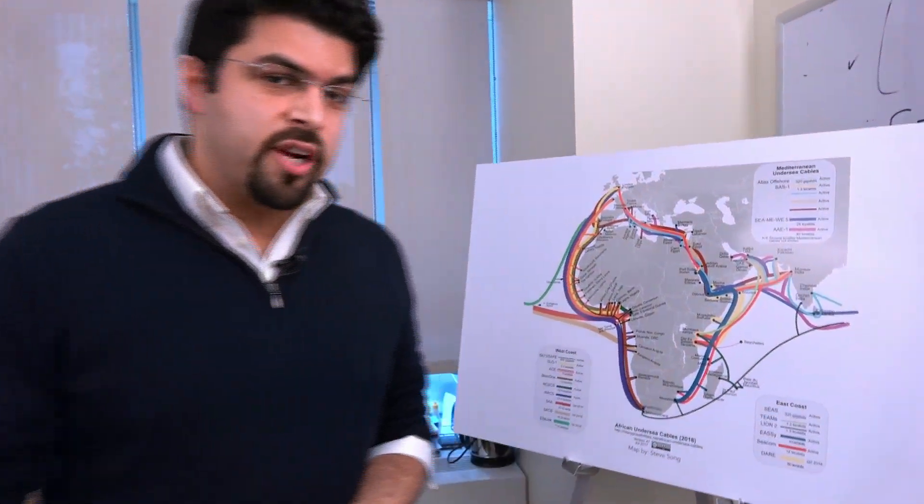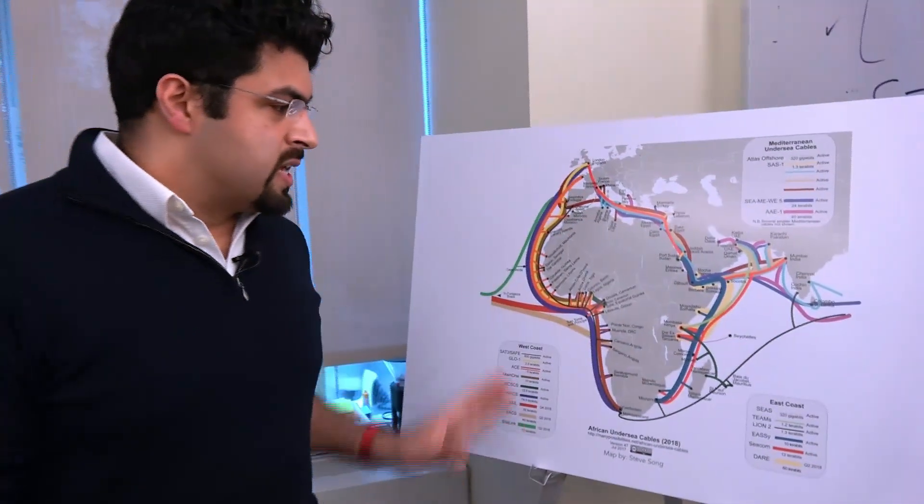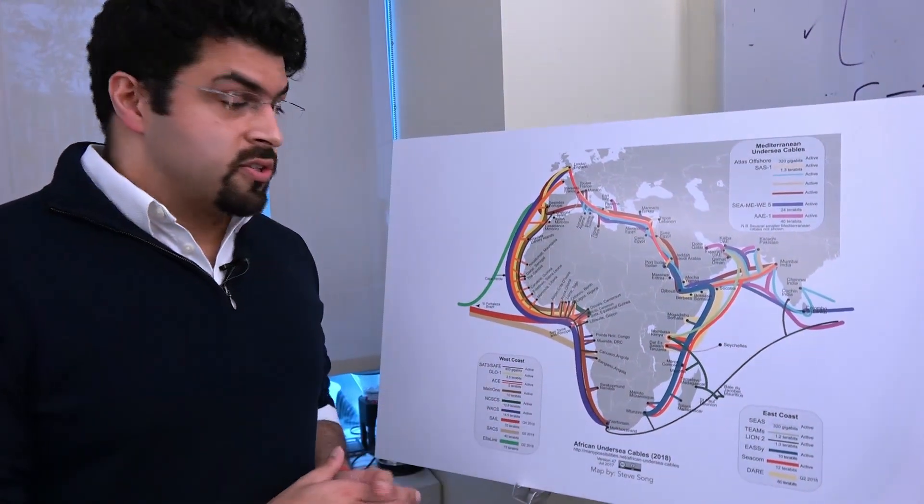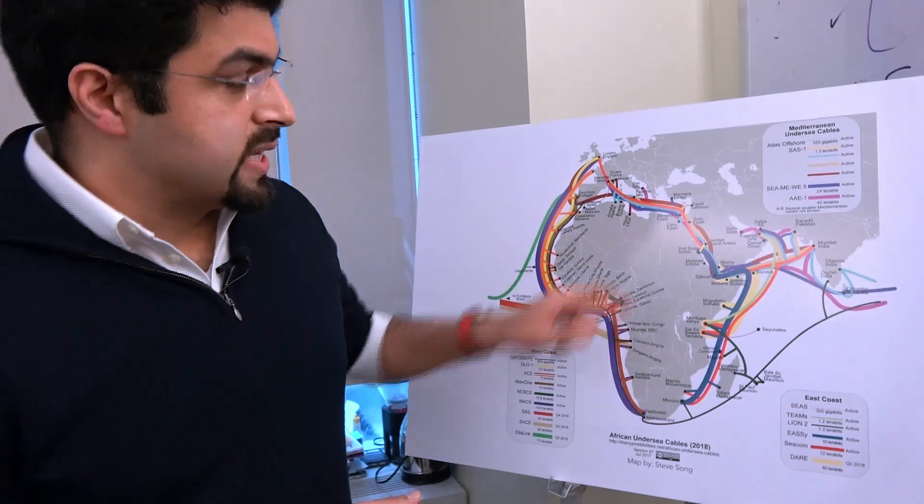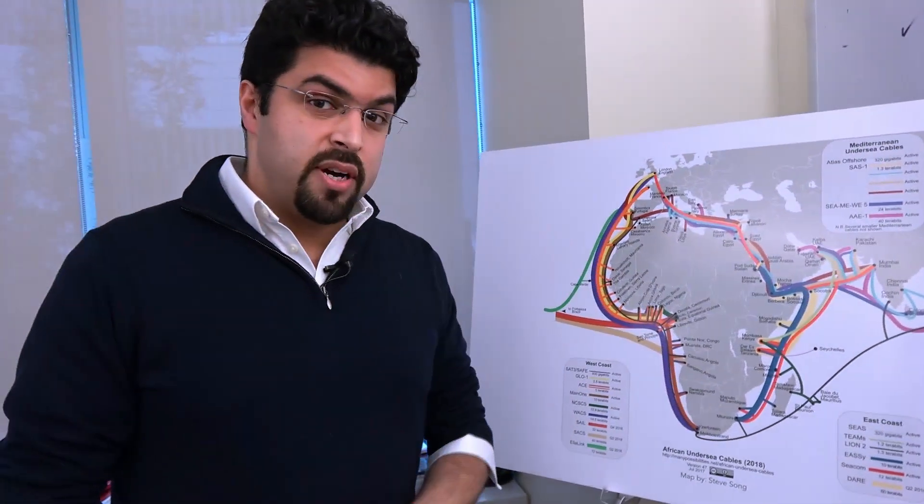Take a look at this map of Africa. So these are the major undersea cables around the continent. And now one of these, this dark blue one here, called the Easy Cable, was partly funded by the World Bank.